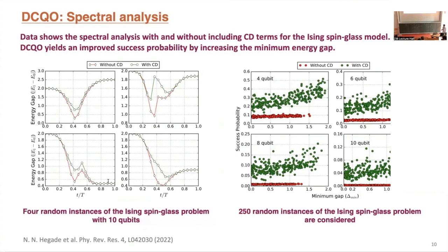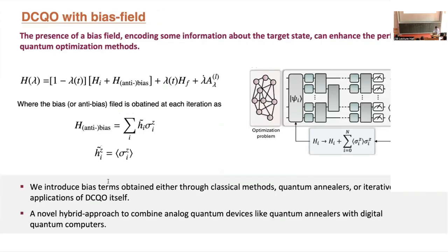We also performed spectral analysis and noticed that inclusion of the counter-diabatic terms increases the energy gap. This is not true in general, but for all the optimization problem instances we studied, the first-order counter-diabatic term increased the gap. We then developed a concept called the bias field: the idea is that after measuring the solution from the DCQC evolution, you feed that solution back and repeat the evolution — iteratively biasing the initial Hamiltonian using the expectation value in the Pauli-z basis.